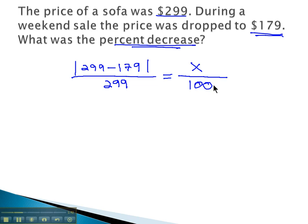In order to make this into something nicer to solve as a proportion, we need to know what the absolute value of 299 minus 179 is. So if we do 299 minus 179, we get 120. And the absolute value of 120 is 120. So we have 120 over 299 equals x over 100.